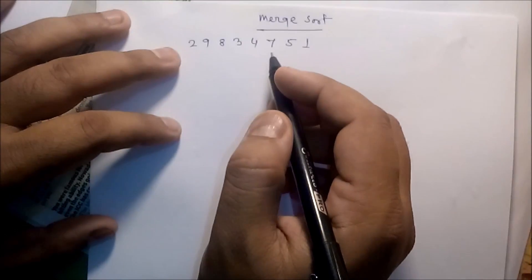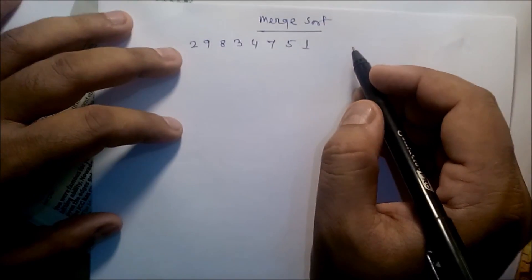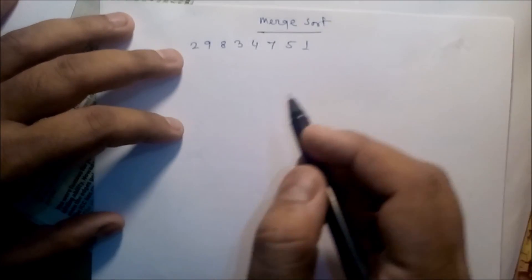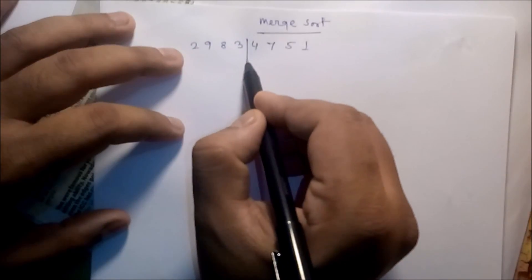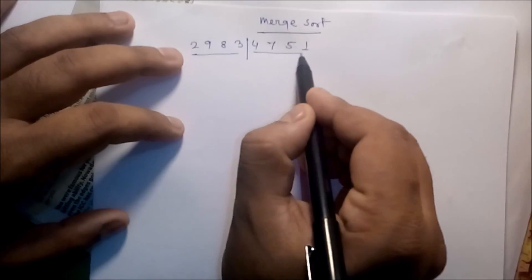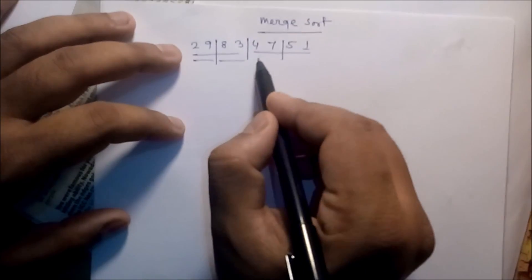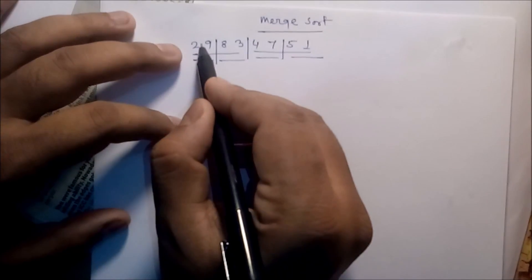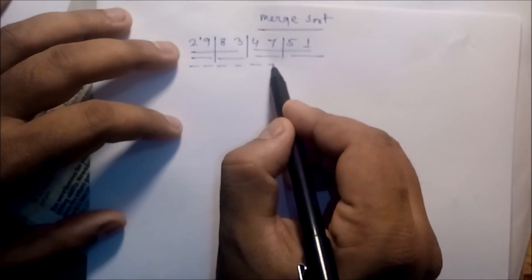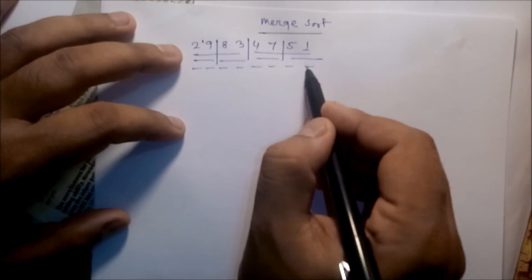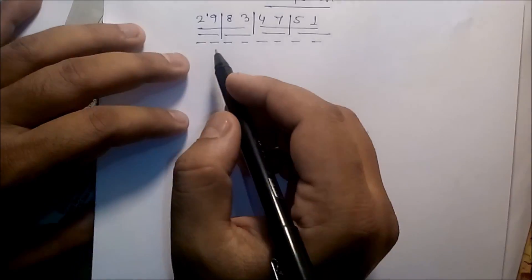In merge sort there are two parts: the divide part and the merge part. We divide the data into two equal parts, then divide again, continuing to divide the data until n equals 1, meaning each element is a single unit.